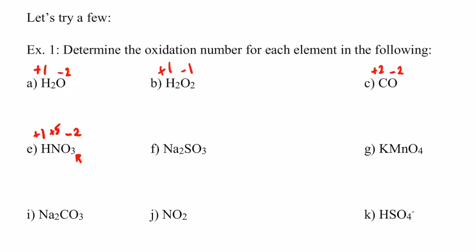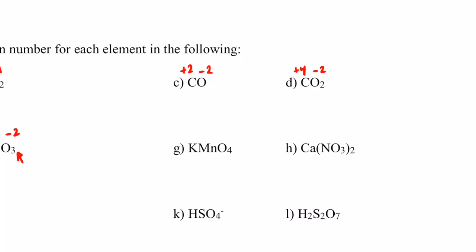Try letter f on your own, then come back. For Na2SO3: oxygen is negative two, and three oxygens give six negatives, so we need six positives. Sodium is in group one, so it can only be positive one. With two sodiums, that's two positive charges, leaving sulfur to be positive four. Two plus four gives six positives, balancing the six negatives for a neutral compound.